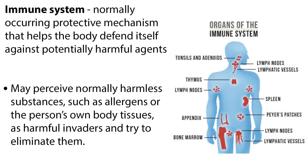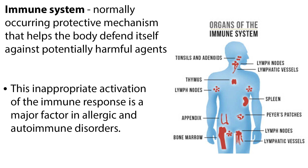Welcome to this video tutorial on immunomodulators and immunosuppressive agents. The body's immune system is a normally occurring protective mechanism that helps the body defend itself against potentially harmful agents. However, sometimes the immune system perceives normally harmless substances, such as allergens or the person's own body tissues, as harmful invaders and tries to eliminate them. This inappropriate activation of the immune response is a major factor in allergic and autoimmune disorders.